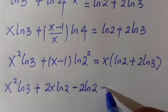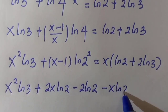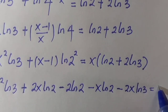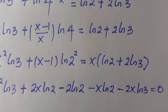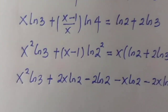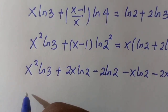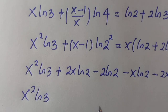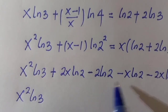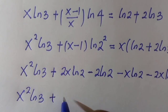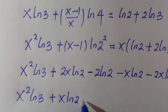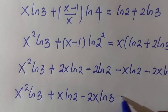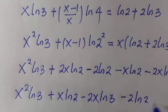Then, taking all terms to one side, we have x ln 2 minus 2x ln 3 equals 0. We collect like terms — those with x. We have x squared ln 3, then 2x ln 2 and x ln 2 can be written as plus x ln 2, then minus 2x ln 3 minus 2 ln 2 equals 0.